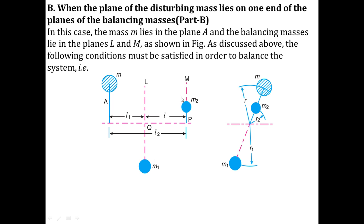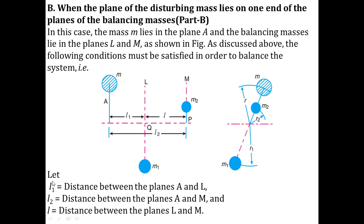M1 and M2 lie in planes L and M as shown in the figure. The following conditions must be satisfied to balance the system. L1 is the distance between A and L, and L2 is the distance between A and M. R is the radius, and this is the axis of rotation of the shaft. The distance from the axis of rotation to the center of gravity of M is r, to M2 is R2, and to M1 is R1.